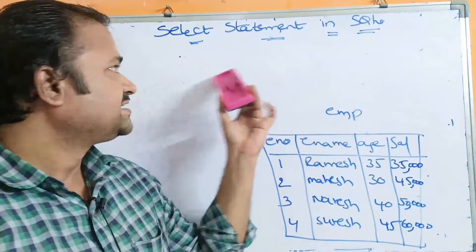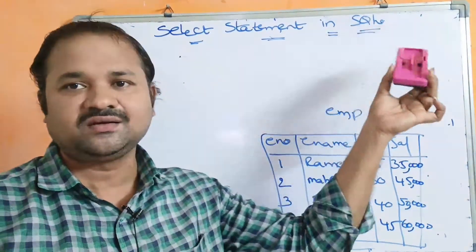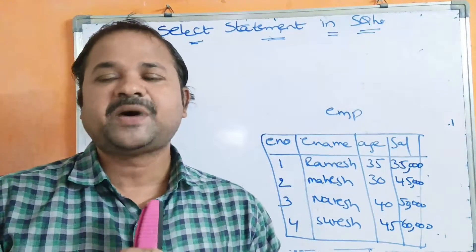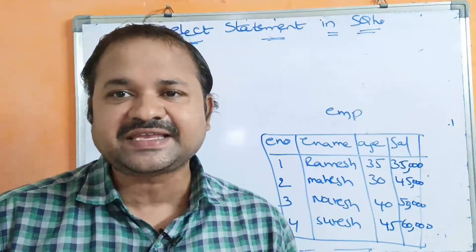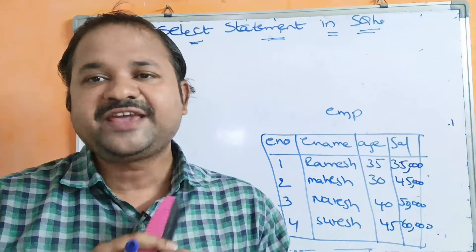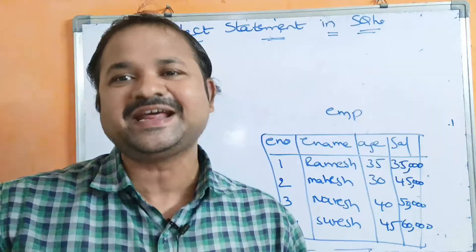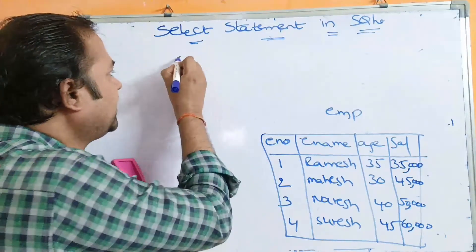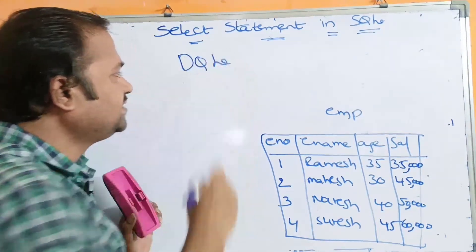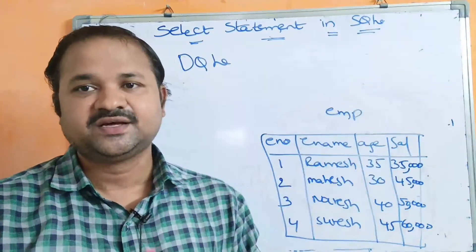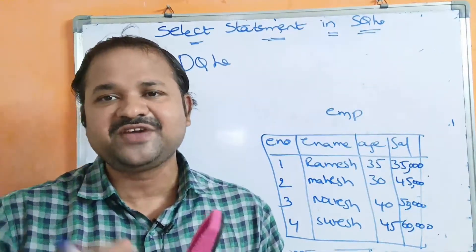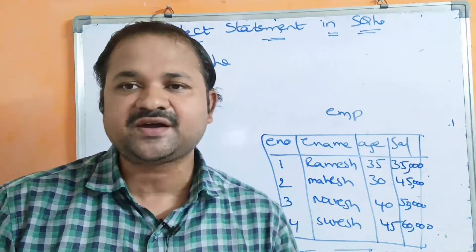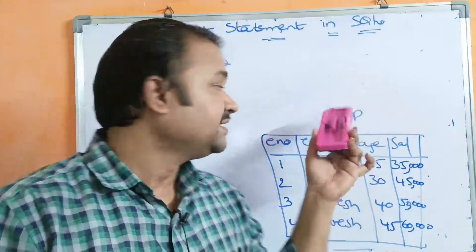Let us discuss the SELECT command in SQL, also called a SELECT statement. By using the SELECT command, we can select data from a table or from the database. SELECT command is called a DQL command — DQL stands for Data Query Language. By using SELECT command, we can write a query to display the data, which is why we call SELECT a DQL statement.